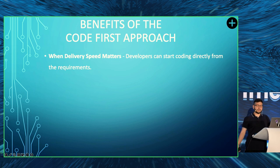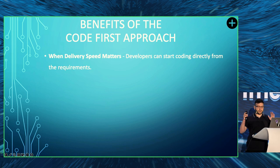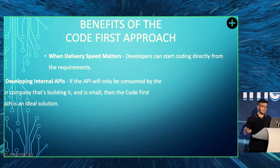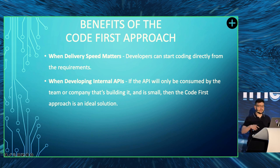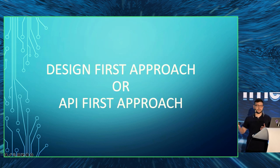Good use cases for code first: when delivery speed matters — you can start coding directly and save time. Also when developing internal APIs: if the API is small or will be used just by the team or company developing it, then that's probably the ideal approach.